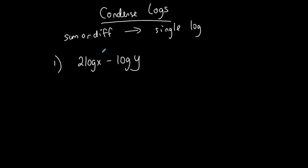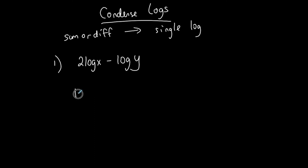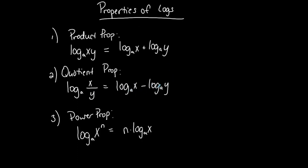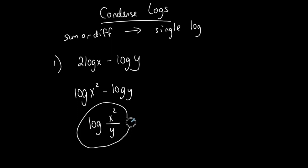The 2 is going to convert into the exponent using the power property. So this becomes log base 10 of x squared. There's no coefficient other than one on the next term, so that stays as log y. A difference of separate logs condenses into a single log of a quotient — this is the numerator and this is the denominator. Keep the base the same.